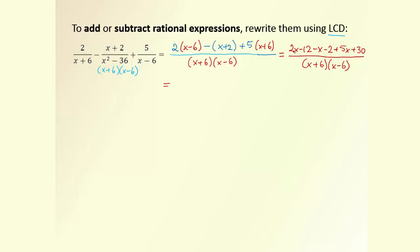Now collect like terms: we have x + 5x = 6x, then −12 − 2 + 30 = +16, over (x + 6)(x − 6). At this stage it's a good idea to check if further simplification is possible. However, even if we factor out 2, we get 3x + 8, which doesn't match any factor in the denominator. So there's nothing more to do, and we leave it that way.